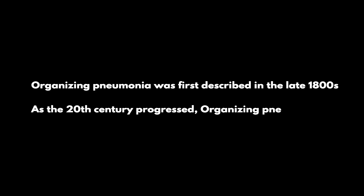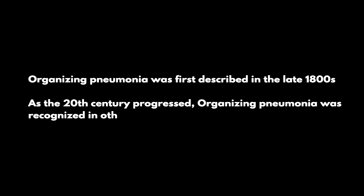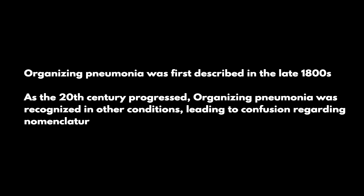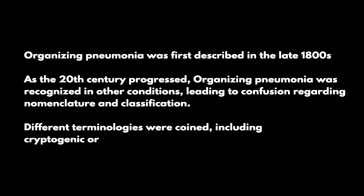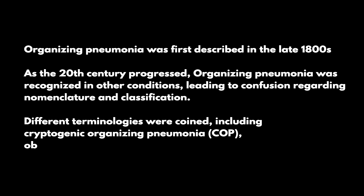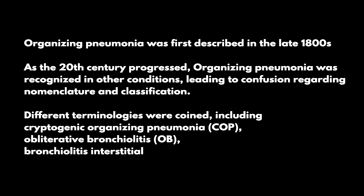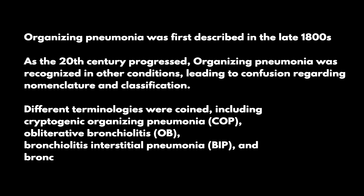Organizing pneumonia was first described in the late 1800s as a non-resolving bacterial pneumonia. As the 20th century progressed, organizing pneumonia was recognized in other conditions, leading to confusion regarding nomenclature and classification. Different terminologies were coined, including cryptogenic organizing pneumonia (COP), obliterative bronchiolitis (OB), bronchiolitis interstitial pneumonia (BIP), and bronchiolitis obliterans organizing pneumonia (BOOP).